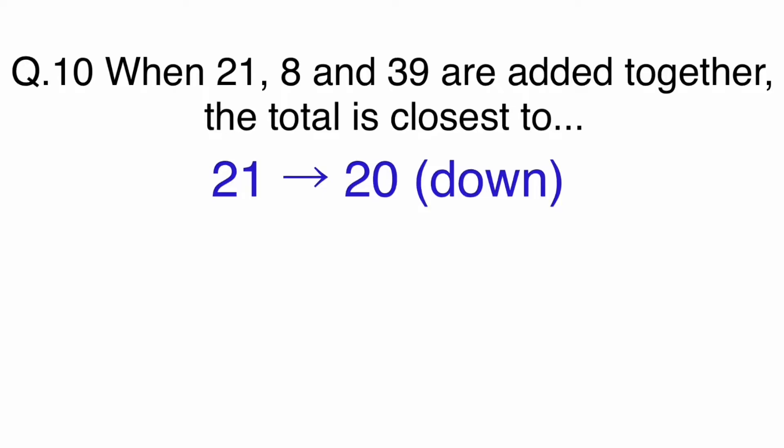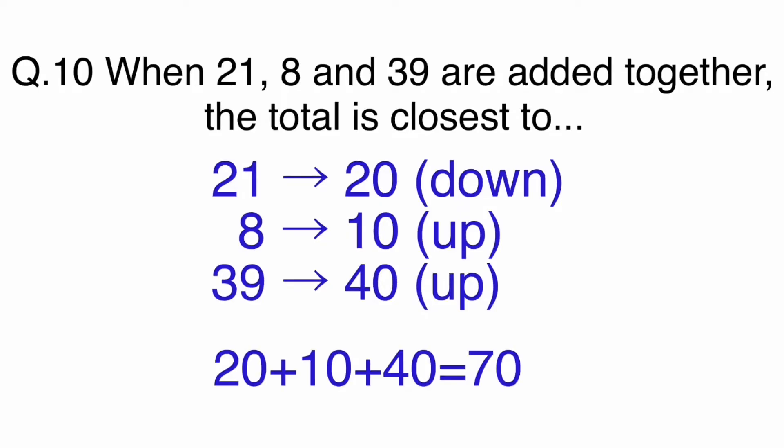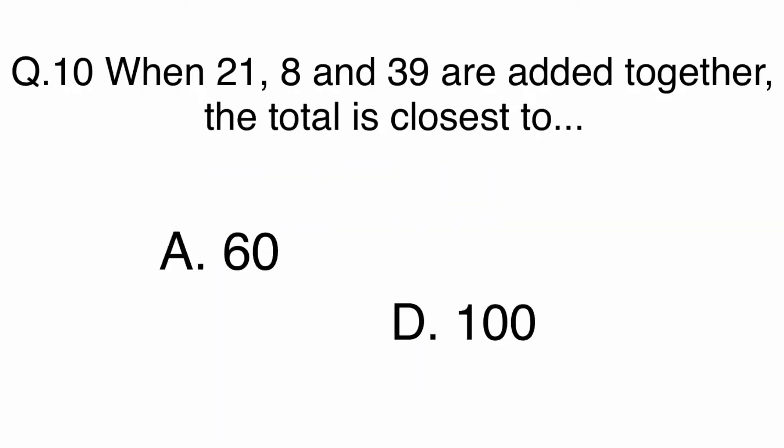21 rounds down to 20. 8 rounds up to 10. And 39 rounds up to 40. So to get the answer, simply add the numbers we rounded all together. The answer is B. 70.